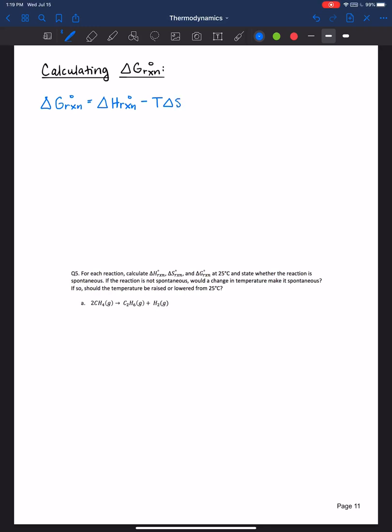Once we know the sign of Gibbs free energy, whether it's positive or negative, we can determine if the reaction is spontaneous or not. The way I've written this equation, we're in standard conditions, which typically means the temperature is 298 Kelvin or 25 degrees Celsius.